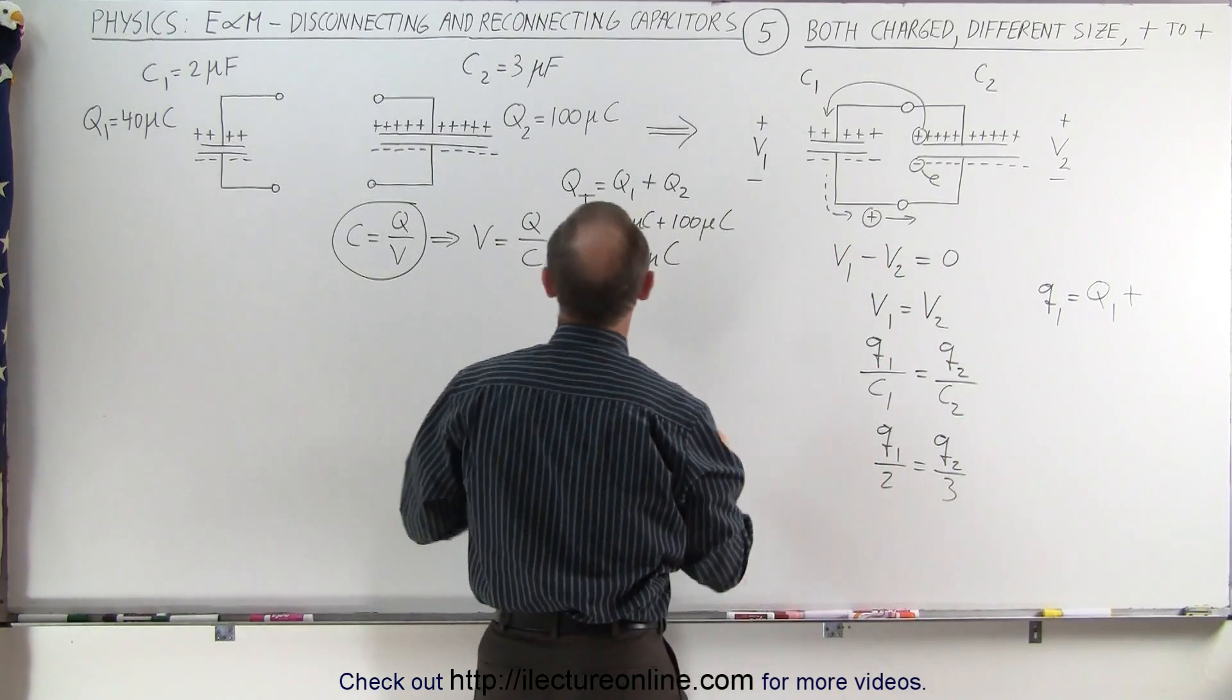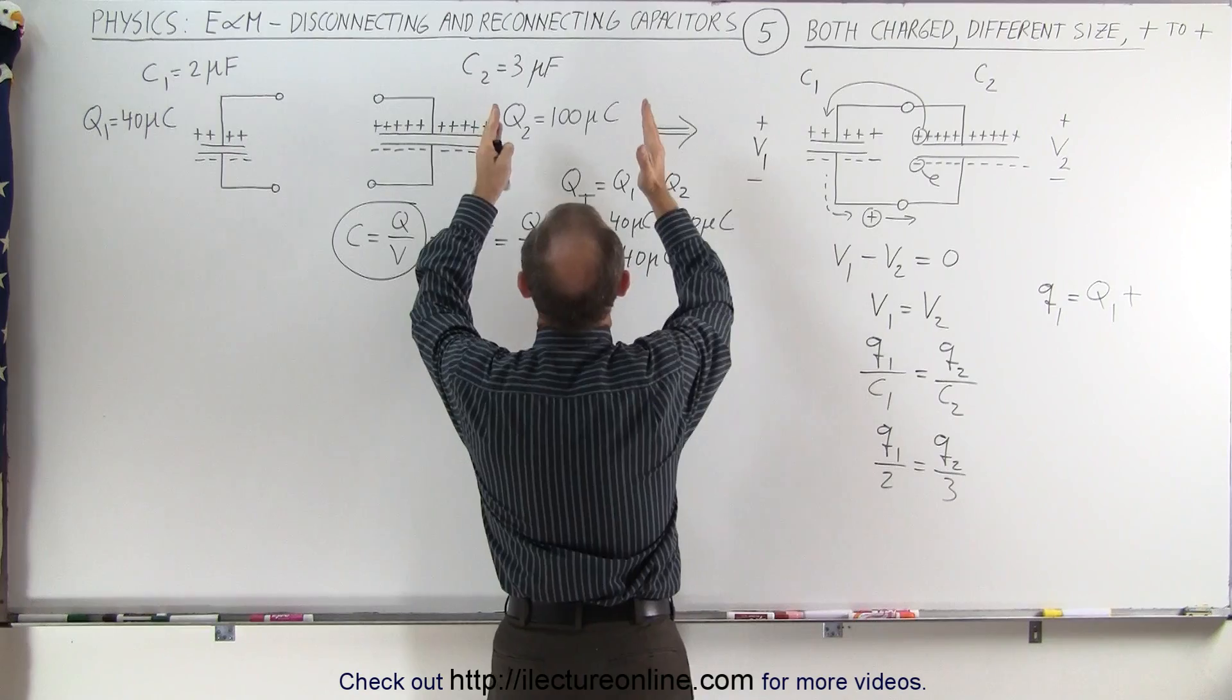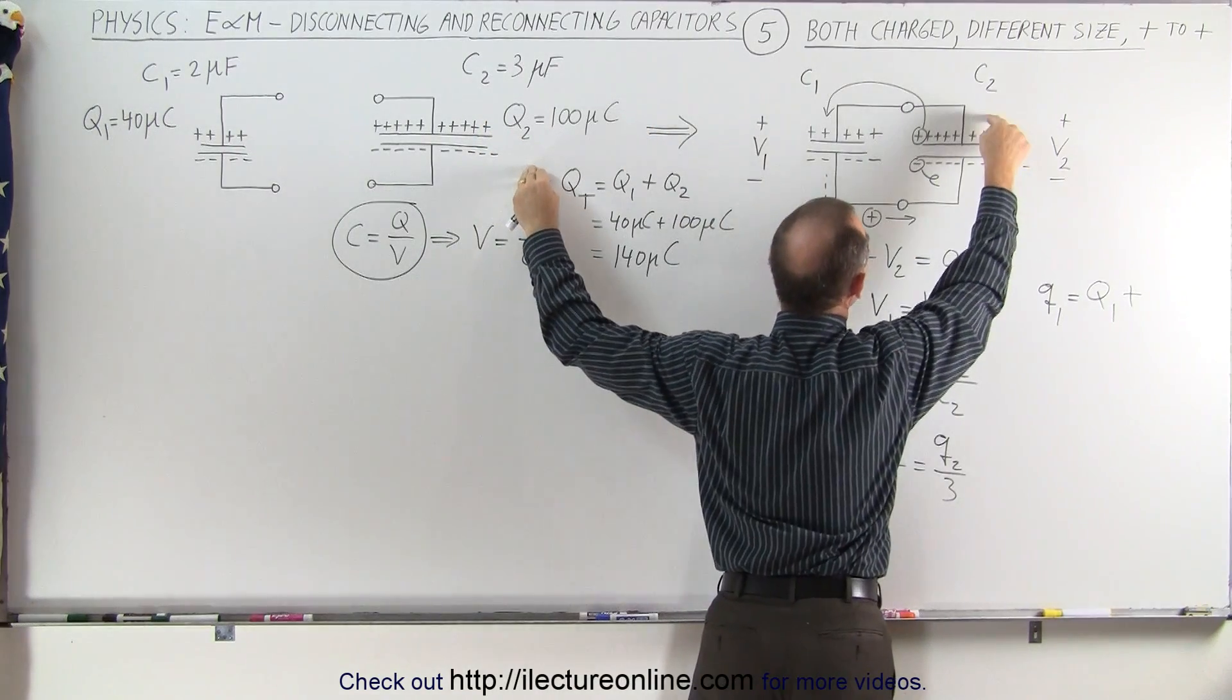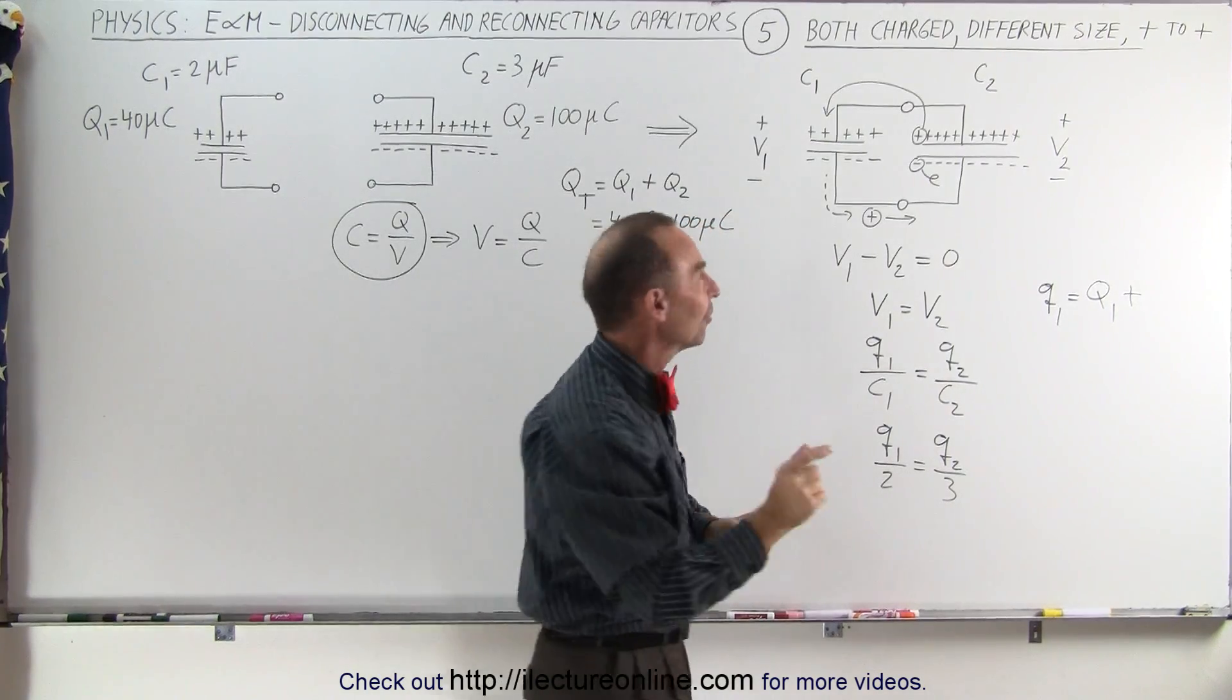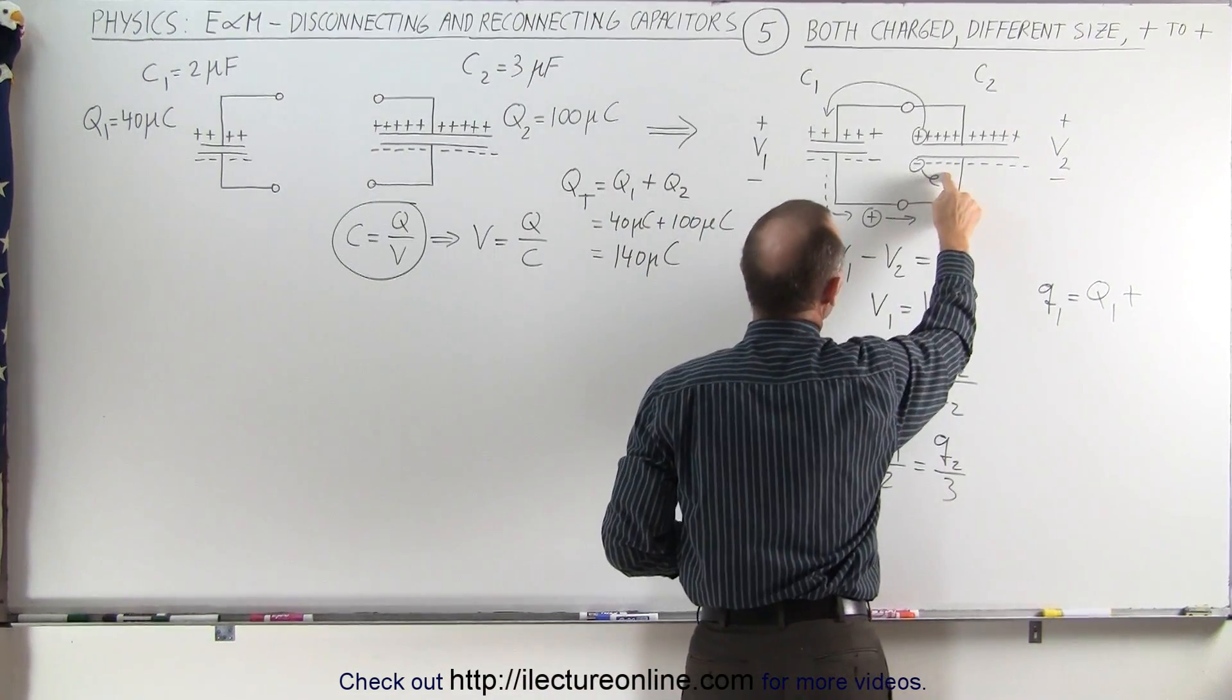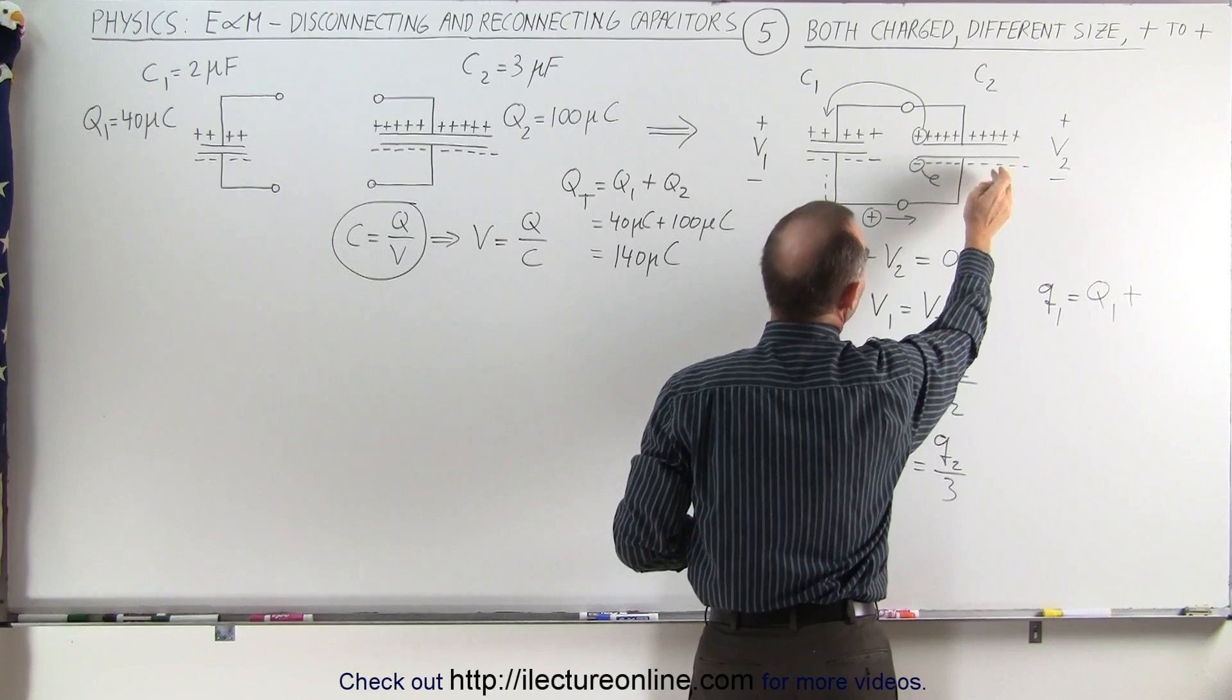Well, it's going to add the initial charge that C2 had minus the final charge C2 is going to end up with. It's going to be the difference of the charge it started with minus the charge that it ended up with.